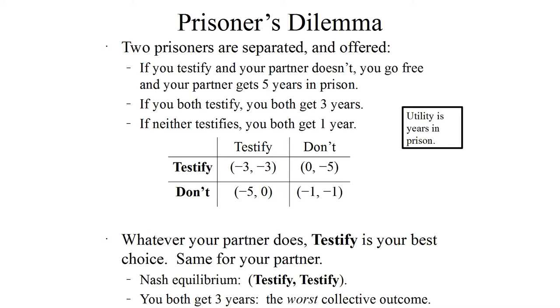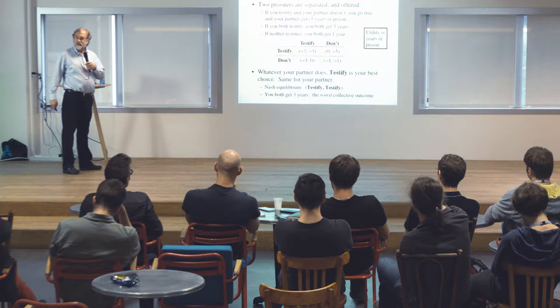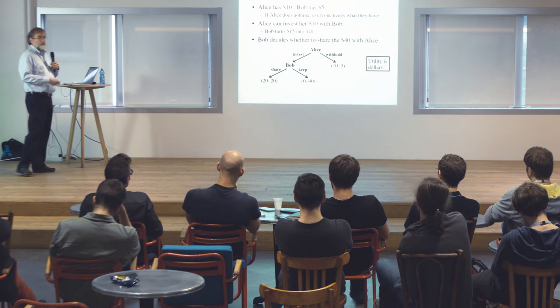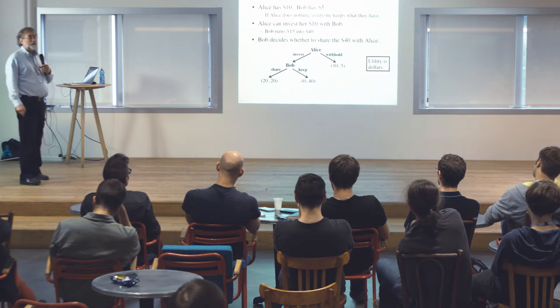In the tragedy of the commons, we imagine that we all live in a little village and we all are raising sheep and I can graze my sheep in my own land in the backyard or in the commons, which I share with everybody else. So where should I graze my sheep? It's clearly better for me to graze them in the commons and save my backyard for when times get tough. But of course, that's true for everybody in the village. So everybody grazes their sheep in the commons and it gets overgrazed. The commons dies and becomes a bare piece of plot of land and we're all worse off.